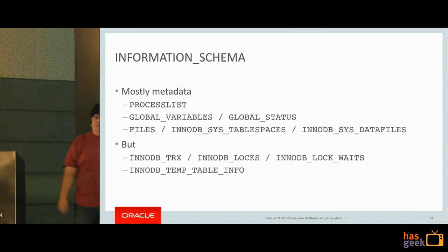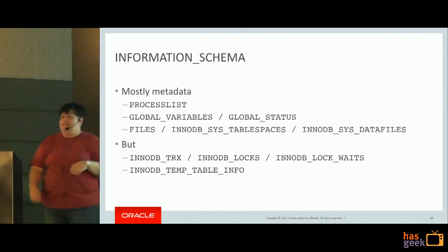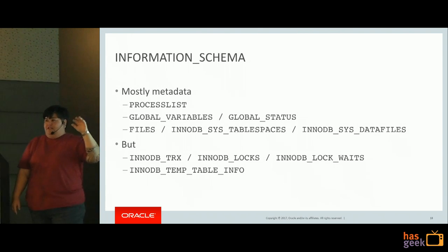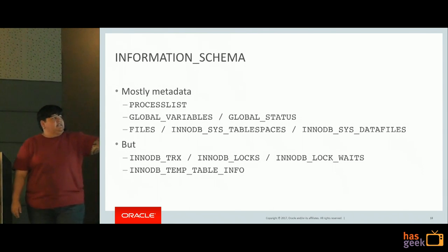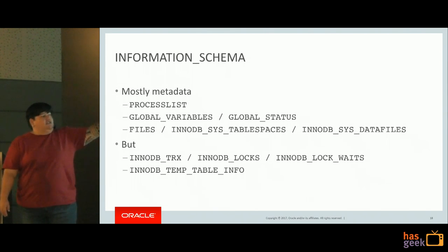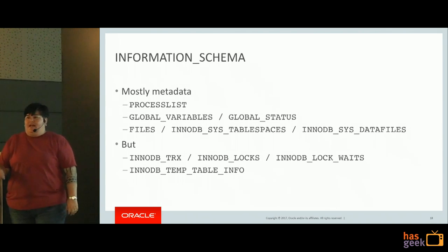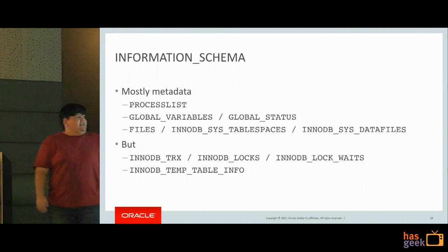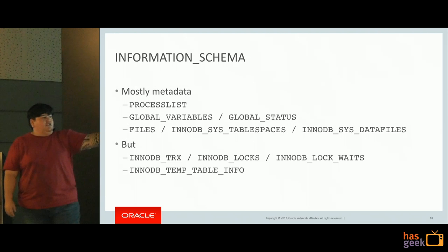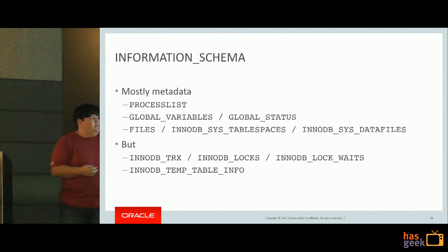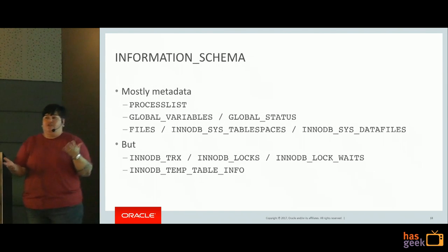Along with SHOW commands, MySQL also has the information_schema. If you're familiar with other databases, you're probably used to this concept. Information_schema provides mostly metadata about your system: the process list, variables (your server settings), and global status - MySQL keeps counters of everything that happens in the system. Files, tablespaces, data files - all available as metadata. Inside information_schema there are also the InnoDB transaction table, InnoDB locks table, and InnoDB lock waits table - big ones if you're having problems with transactions or locking.